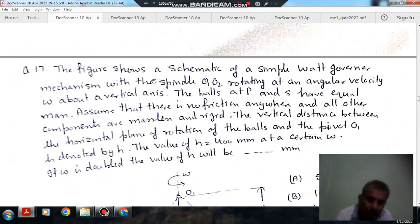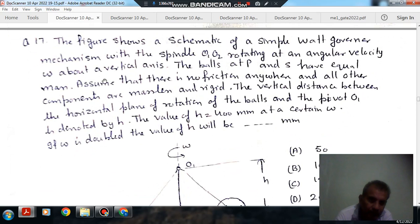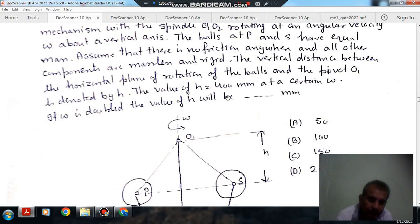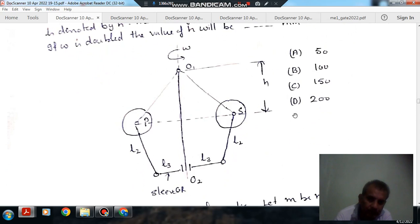Next, the figure shows a schematic of a simple governor mechanism with the spindle O1 O2 rotating at an angular velocity omega about a vertical axis. The balls at P and S have equal mass. Assume that there is no friction anywhere and all other components are massless and rigid. The vertical distance between the horizontal plane of rotation of balls and the pivot O1 is denoted by H. The value of H is equal to 400 mm at a certain omega. If omega is doubled, then the value of H will be blank mm. Options are: A is equal to 50, B is equal to 100, C is equal to 150, D is equal to 200.